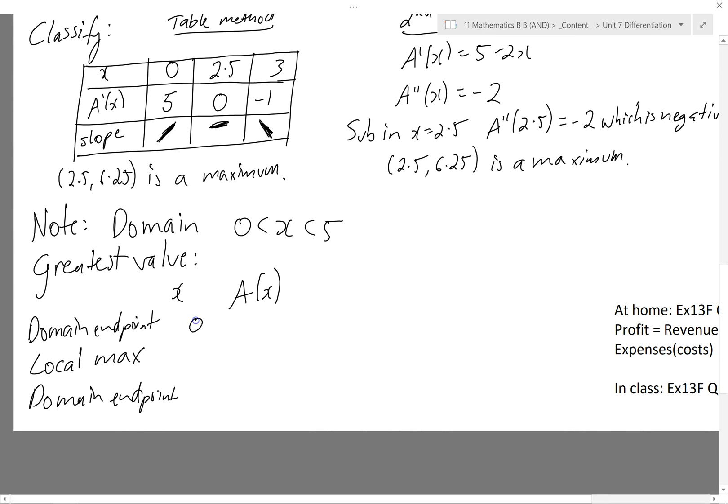So I really should evaluate at 0, 2.5, and 5. Thankfully, I've already found what area is at 2.5, at 6.25. Subbing in 0 into my area formula will give me zeros on both sides here. So if I graphed area versus the length of one side, it'd be a quadratic looking like this, going through 0 and 5, and it has a maximum at 2.5, 6.25.